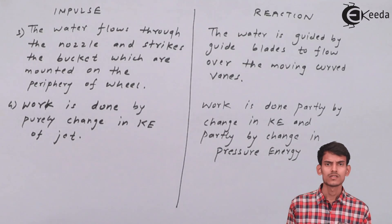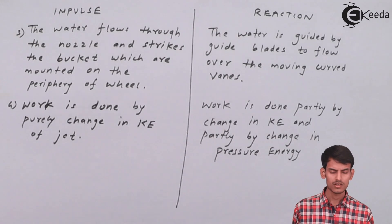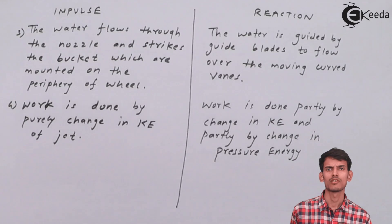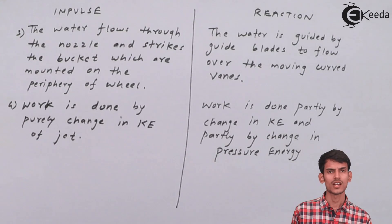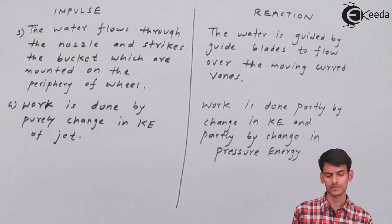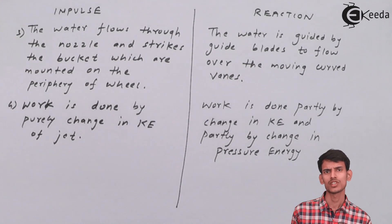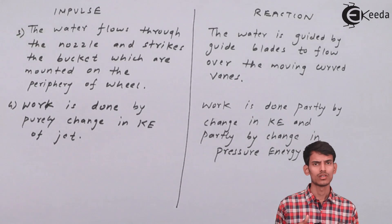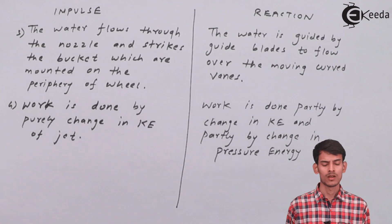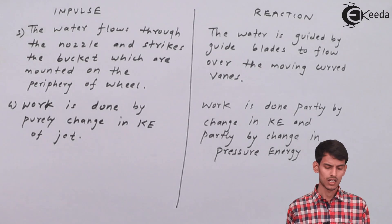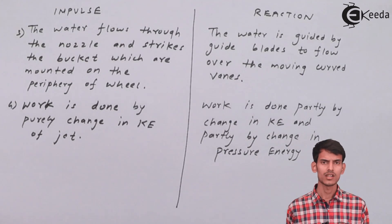The fourth difference is about work done. In an impulse turbine, the power developed is due to the change in kinetic energy only. In a reaction turbine, the work output is due to both change in kinetic energy and change in pressure energy. So in impulse turbine only kinetic energy is involved in generating power, whereas in reaction turbine both kinetic energy and pressure energy are involved.